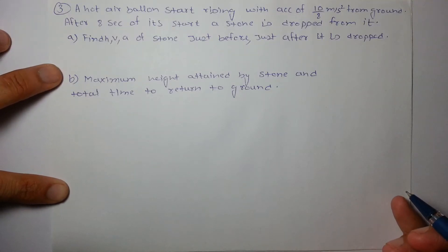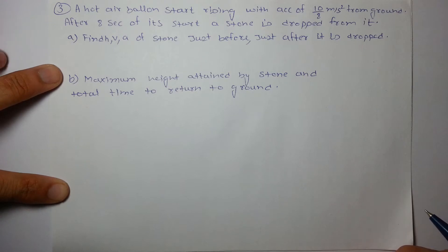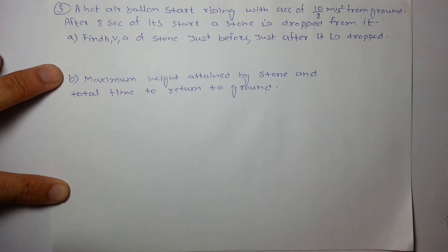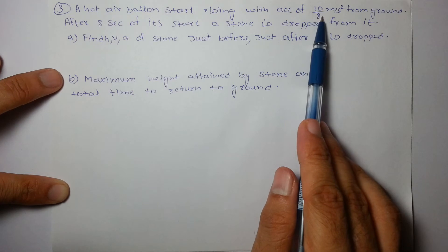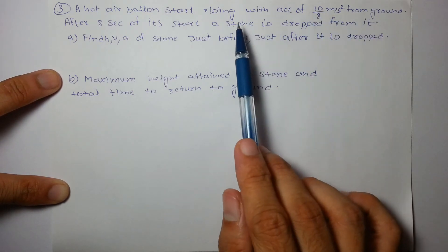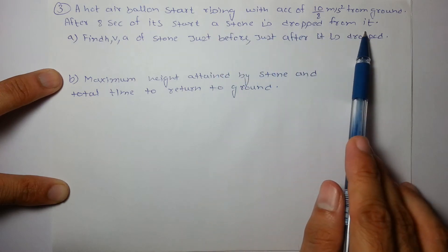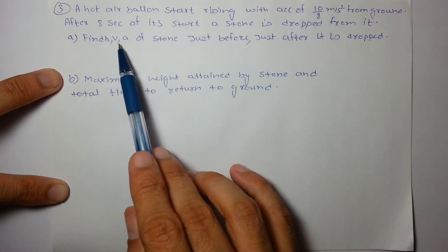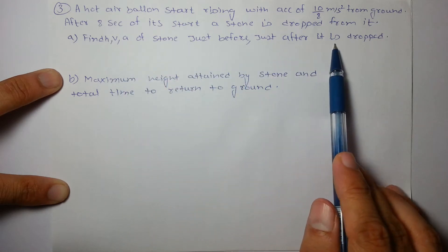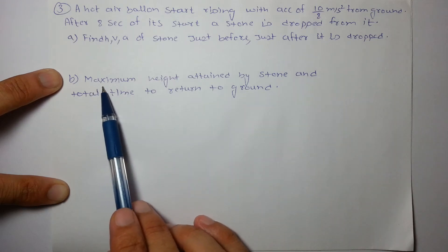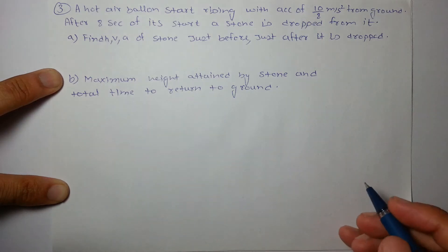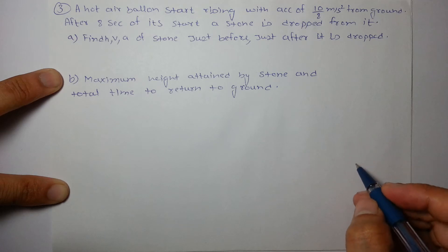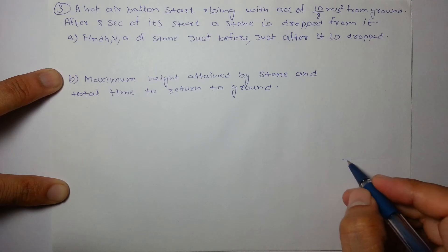Hi friends, in this video we are going to solve few important questions related to motion under gravity. Let's start with the first one: a hot air balloon starts rising with an acceleration of 10/8, which is 1.25 m/s², from the ground. After 8 seconds of its start, a stone is dropped from it. We have to find the height, velocity, and acceleration of the stone just before and just after it is dropped, the maximum height attained by the stone, and the total time to return to the ground. Let's draw a diagram — this is the ground.